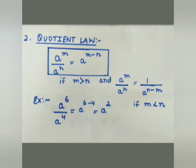So: a to the power m divided by a to the power n gives us, as per our Quotient Law, a to the power m minus n — we subtract the smaller from the greater. For example: a to the power 6 divided by a to the power 4 gives us a to the power 6 minus 4, which equals a to the power 2.